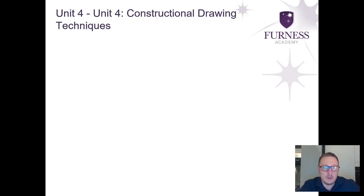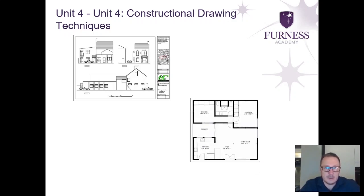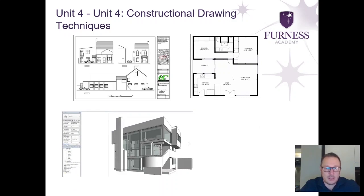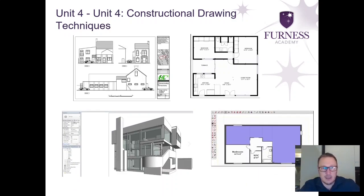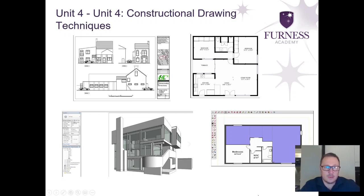Unit four is the constructional drawing unit, where you actually learn how to produce architectural plans. You'll be learning how to do these both by hand and by using computer aided design. Your coursework will involve being given a design brief where you have to design a house — you'll produce the elevation drawings and floor plans both by hand and using computer aided design software.